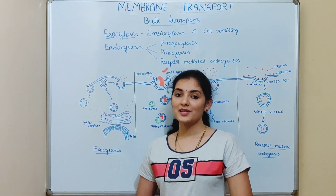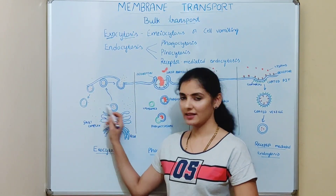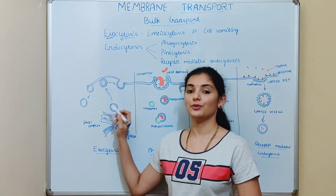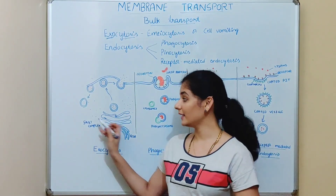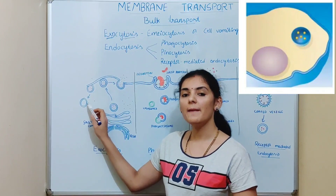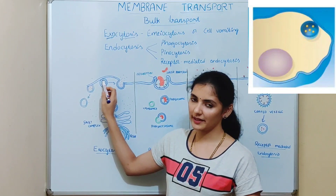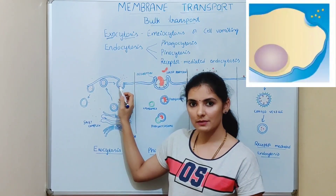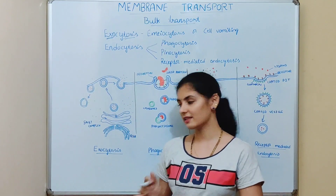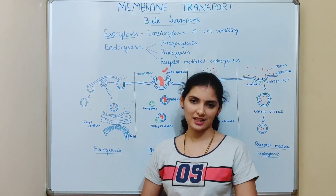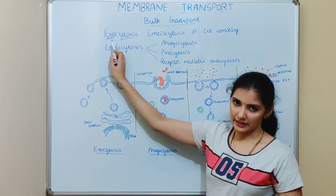In other cases, proteins are also synthesized by free ribosomes present in the cytoplasm. These proteins directly enter into pre-existing vesicles, which are later transported to the edge of the cell. Upon reaching the plasma membrane, their contents are released out. That is how exocytosis takes place.